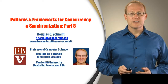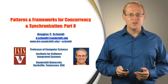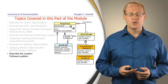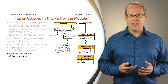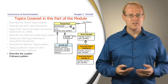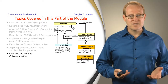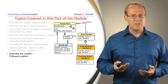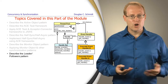Welcome to Part 8 in the module on Patterns and Frameworks for Concurrency and Synchronization. In the previous parts of this module, we first described the active object pattern and illustrated how the ACE Task framework can be used to implement this pattern. We then illustrated the application of ACE Task, ACE Acceptor-Connector, and some other frameworks to implement a thread-per-connection version of our JAWS web server.